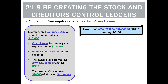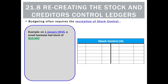One thing we don't know when budgeting is how much stock we think we'll buy during January 2015. To answer that question, we're going to recreate stock control one item at a time. We know at the start of the period we have $10,000 of stock, so the opening balance would be a debit for $10,000.